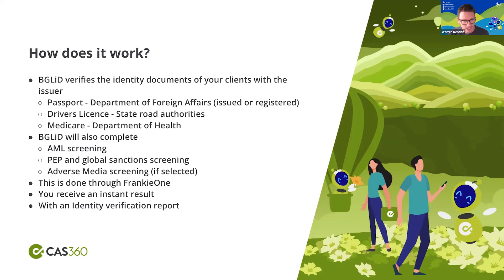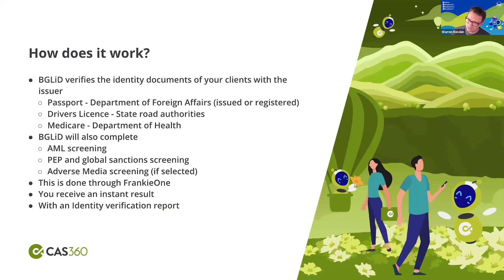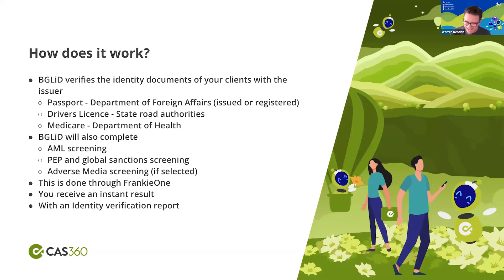We have a more advanced check that includes adverse media findings — screening to check if there is any adverse media against that particular person. When onboarding a client, if you verify their identity but then find out they've got global sanctions, are on an AML list, or have had adverse media for fraud, maybe you want to think about whether to take that client on. BGL-ID offers both ID verification and AML, PEP, global sanctions and adverse news screening. This is done through FrankieOne, our DVS provider. You will receive an instant result — there is no waiting. As soon as you or your client clicks the button, you get that instant result, all with an identity verification report included in CAS360.